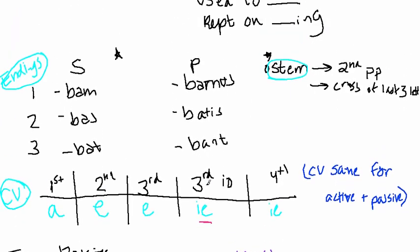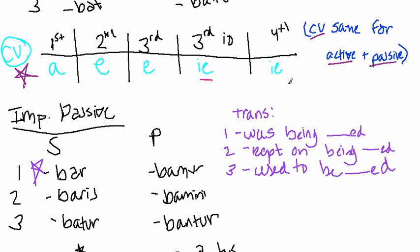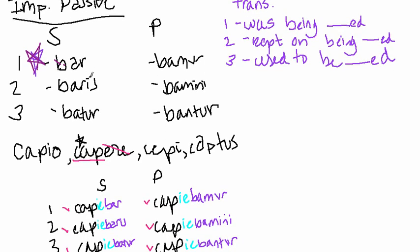And again, these are your active endings. These are your connecting vowels. And again, they're used for both active and passive. And then, this is how you find your stem. And finally, these are the imperfect passive endings. Thank you for watching.